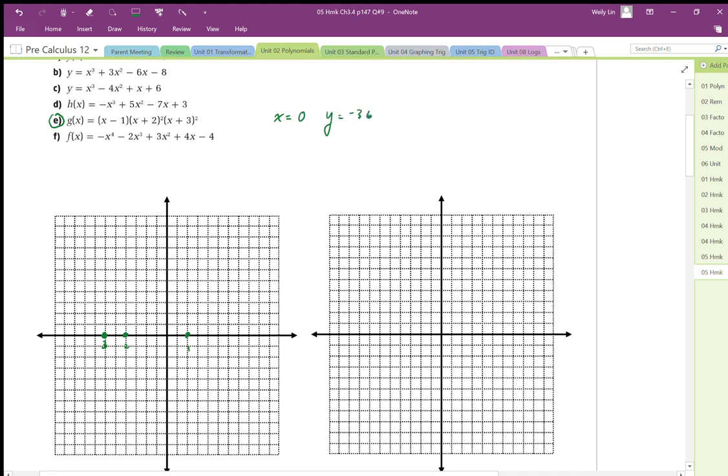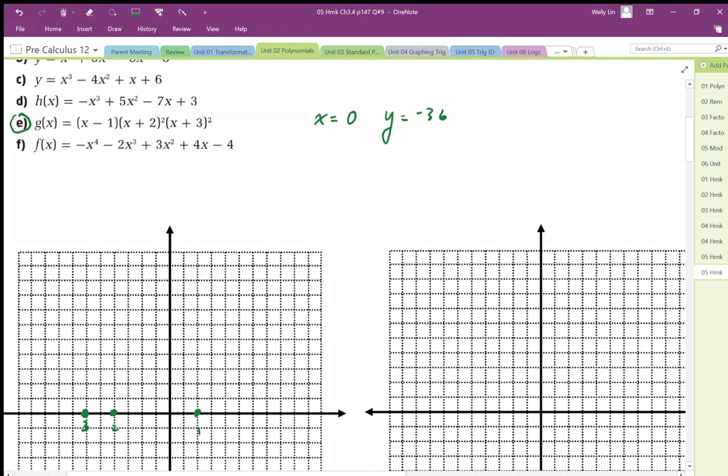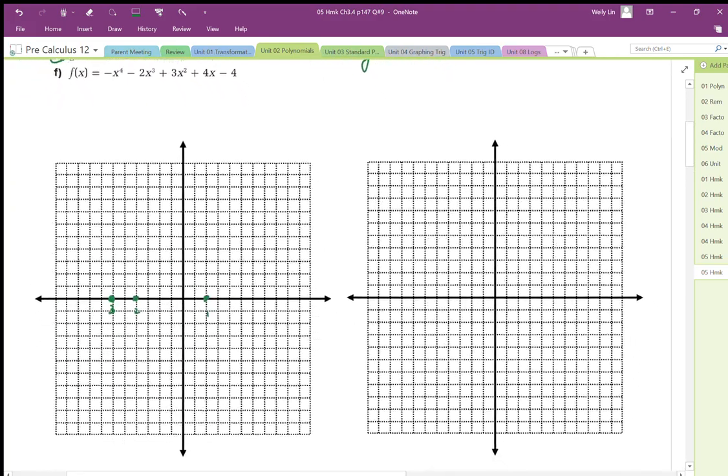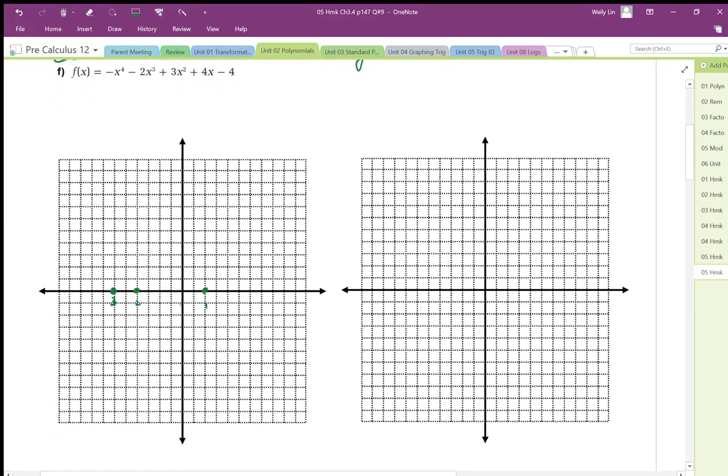So actually, I made a mistake with this one here. The multiplicity was 2 in both cases. So when x is 0, y is negative 36. So I'm going to scale this as well. So I'm going to maybe do this, 10, 20, 30, 40. So that's going to be negative 40, so somewhere right about there. Okay, so negative 40 is my scaling.